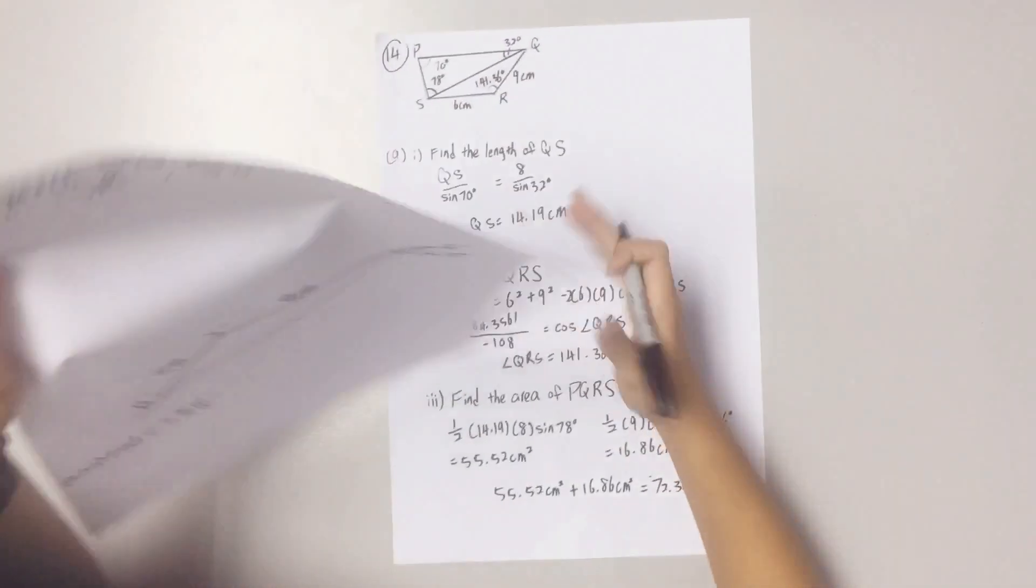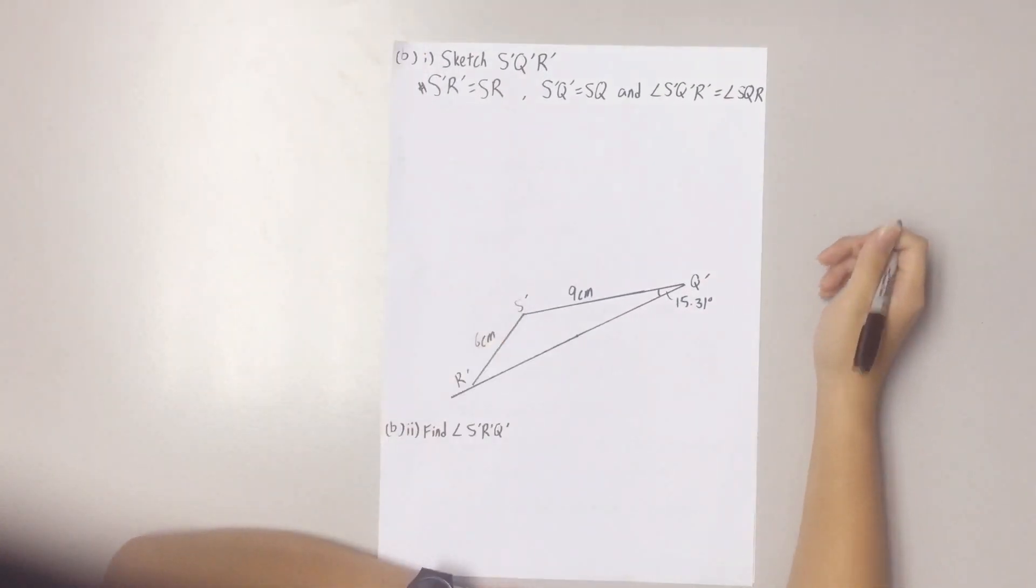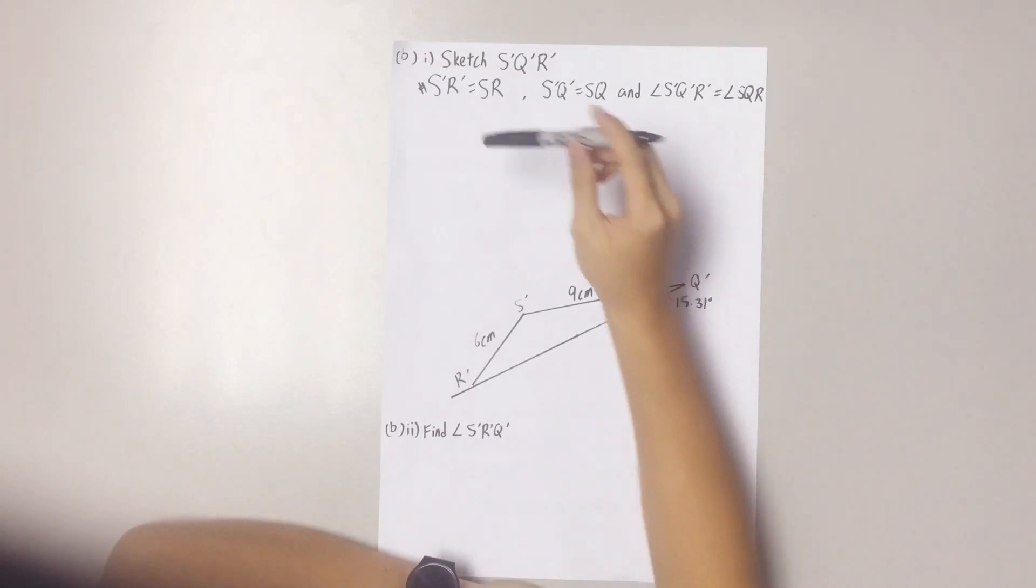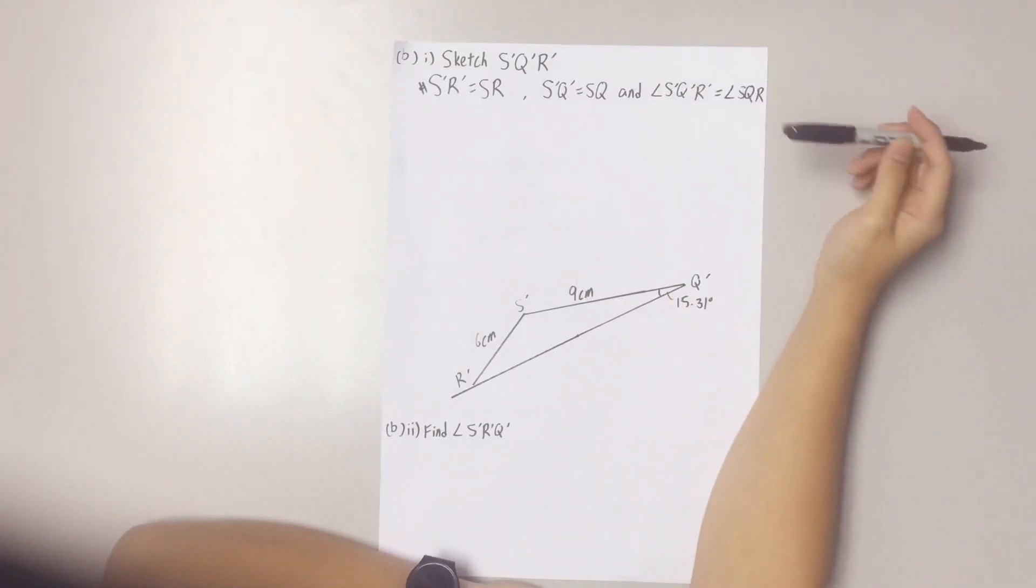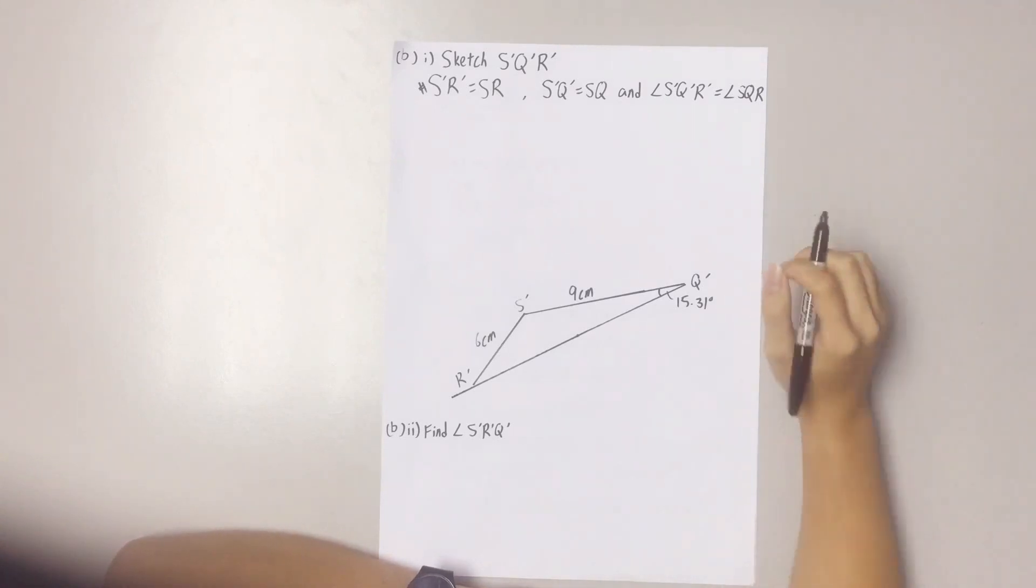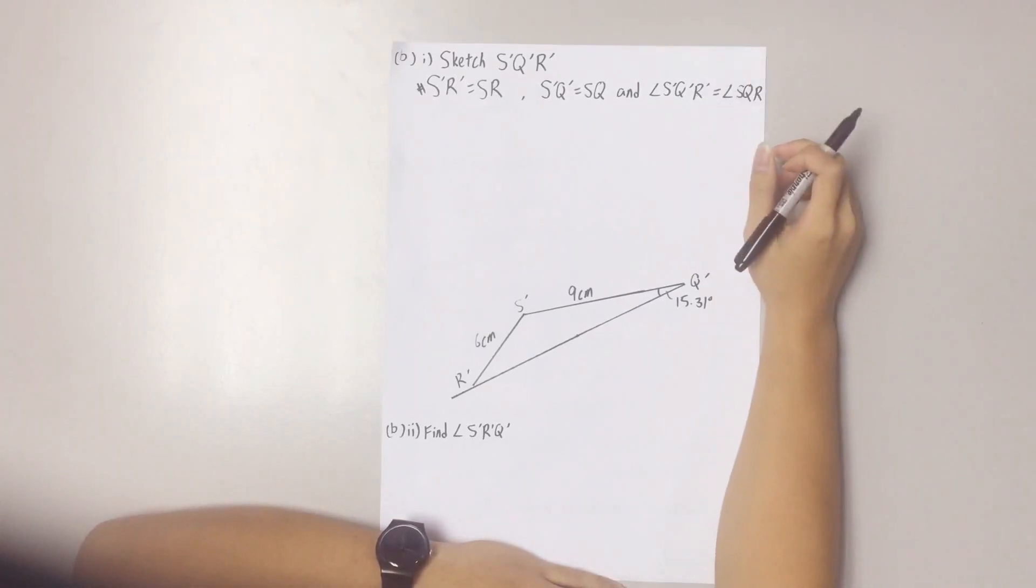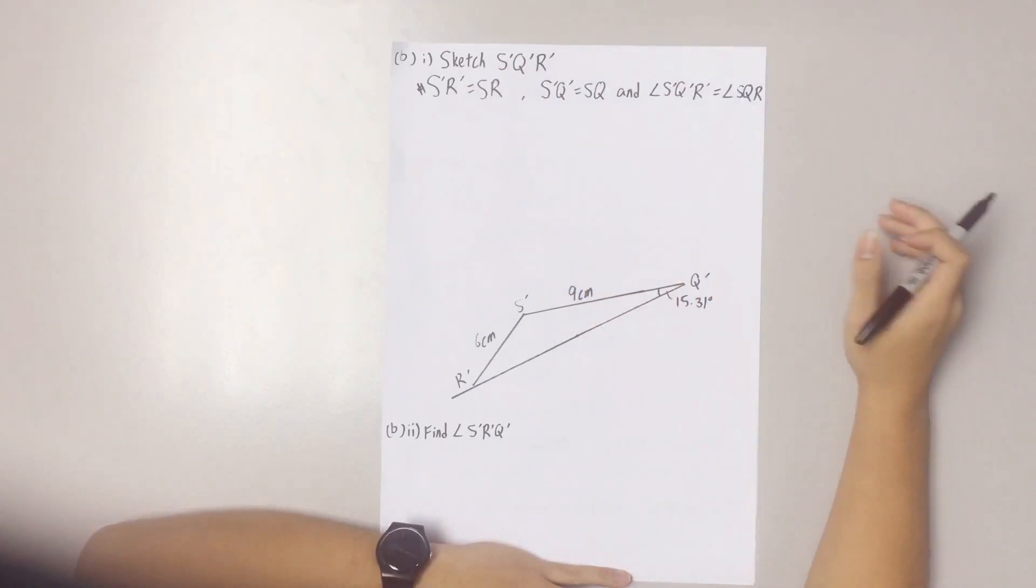Let's move on. B1. Sketch the triangle S'Q'R' given that S'R' equals SR, S'Q' equals SQ and angle S'Q'R' equals angle SQR. First things first. We need to find the angle SQR. This is because we already have SR and SQ given in the question. Now, to find this angle, we have to use the sine rule again.